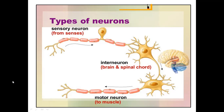The glands in our body are also effector organs, and they all work under the influence of the neurons or nerves under the instruction provided from the central nervous system. So these are the three types of neurons.